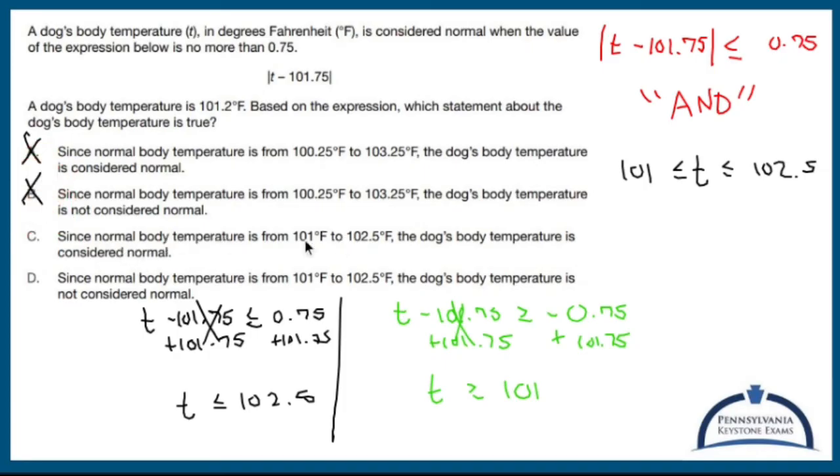Since the normal body temperature is 101 to 102.5, the dog's body temperature is considered normal because it's 101.2. So C is my answer there.